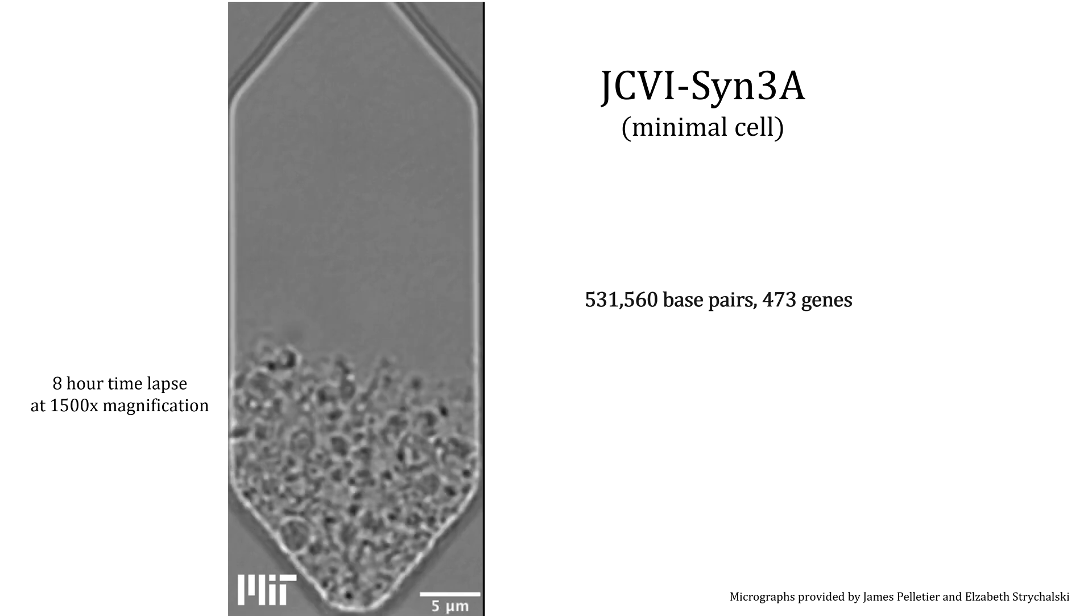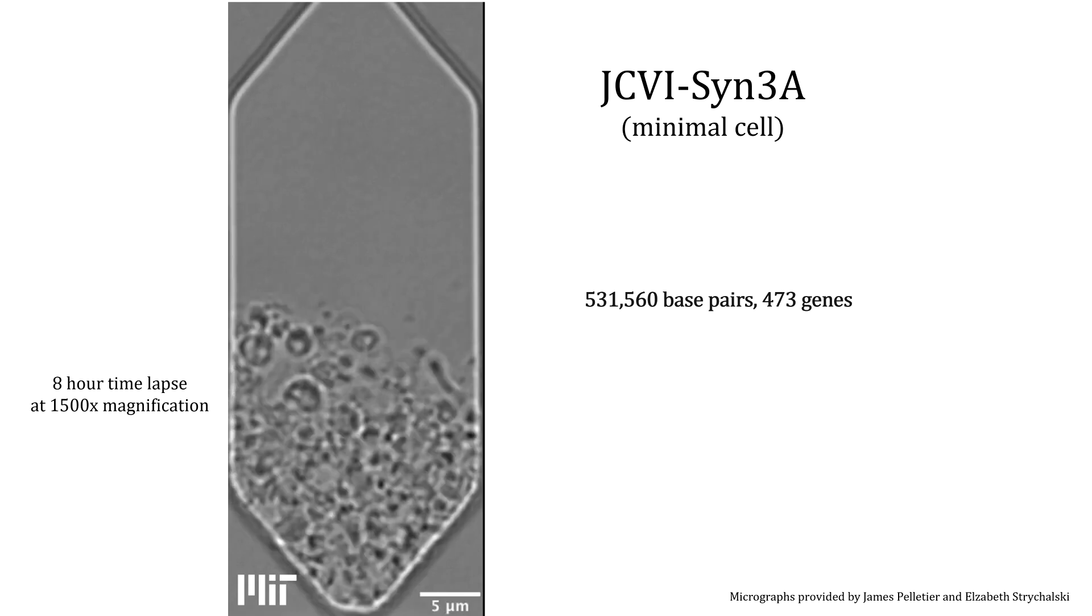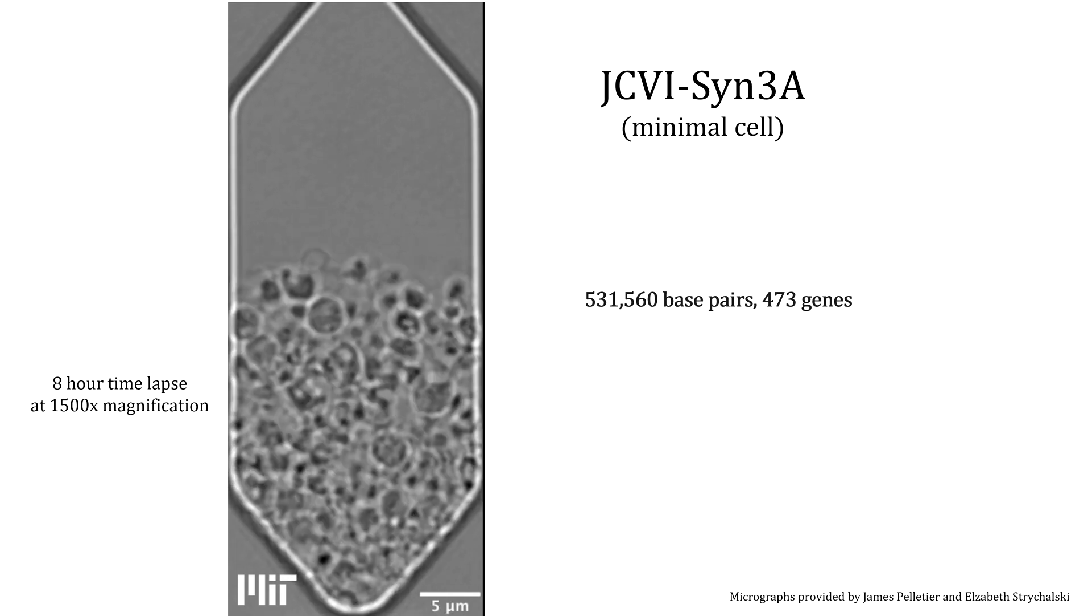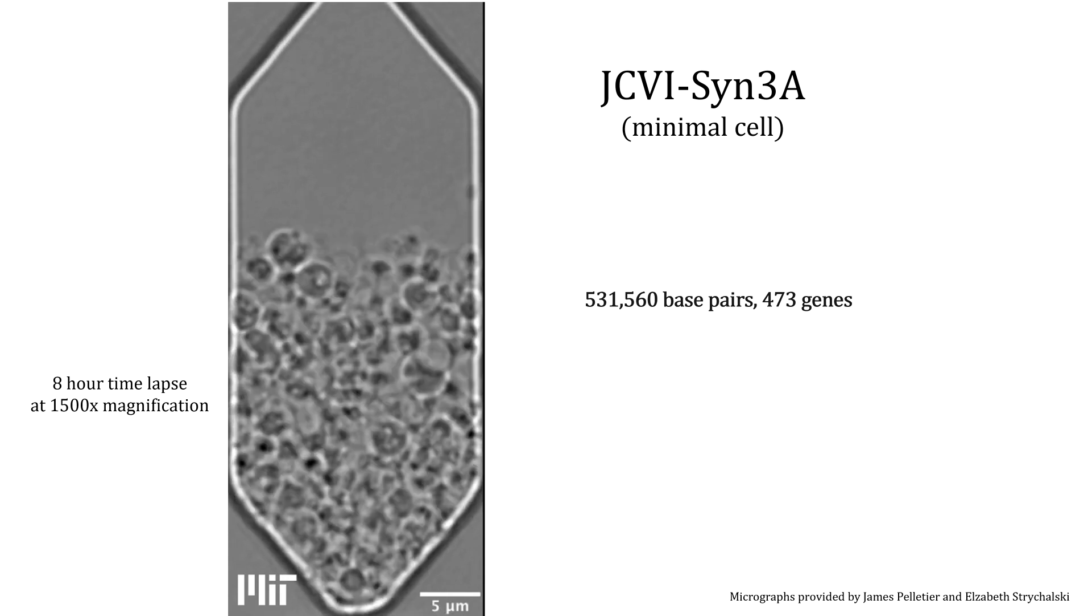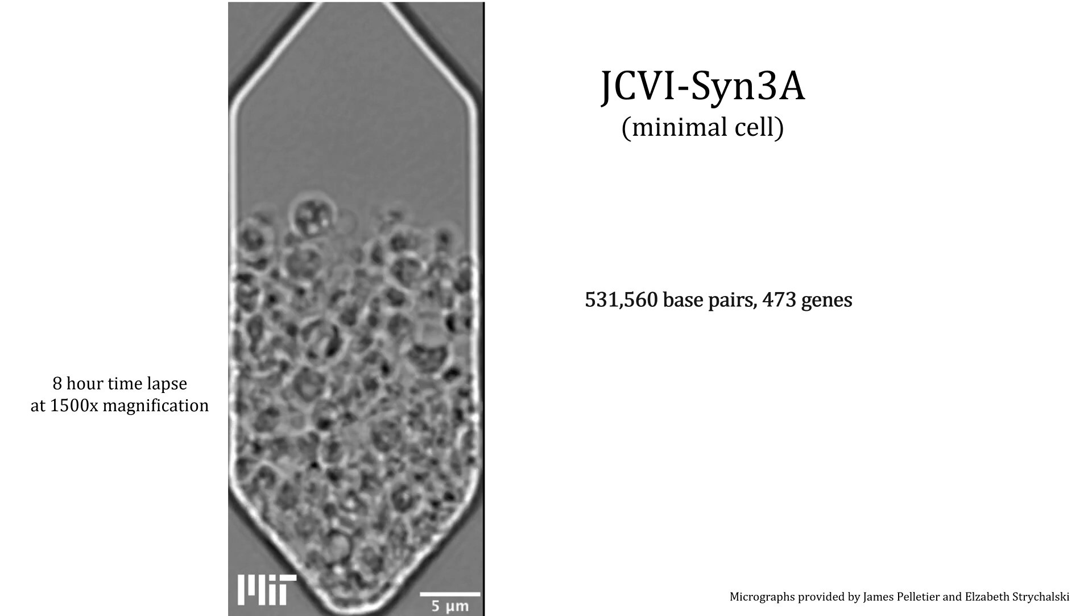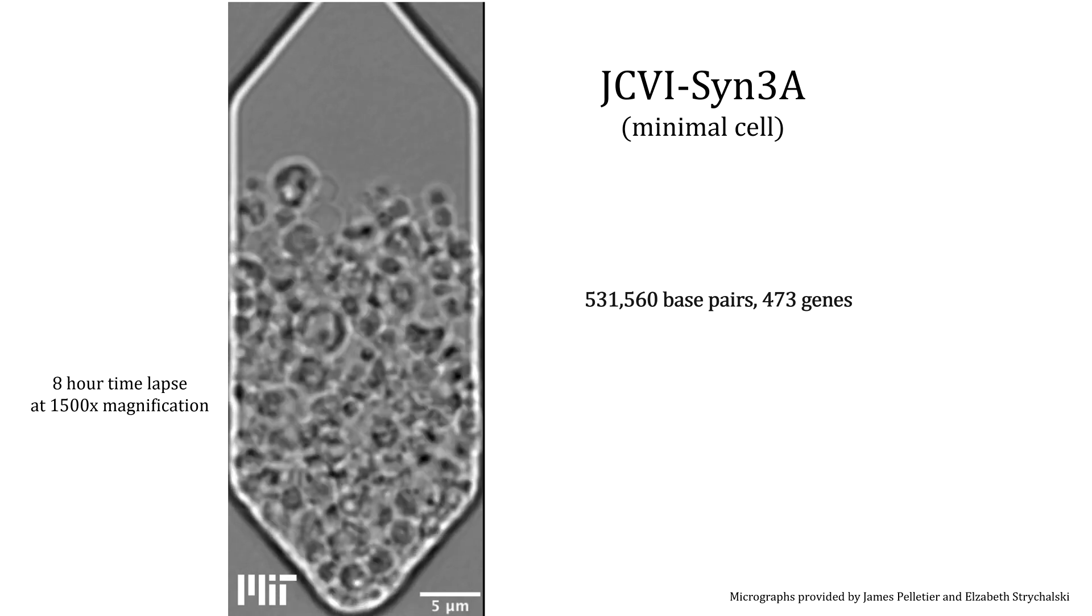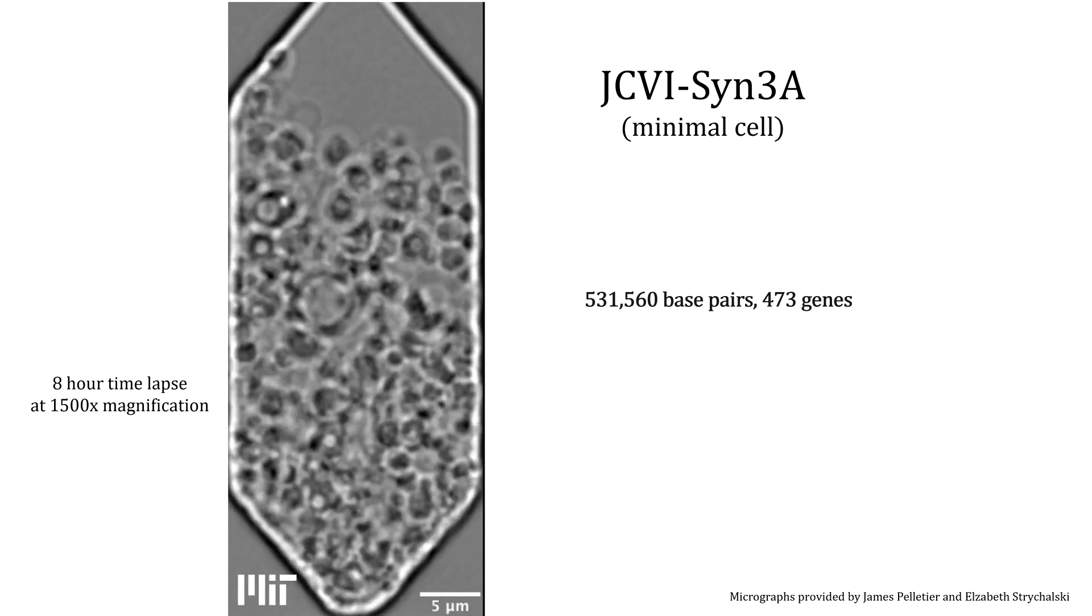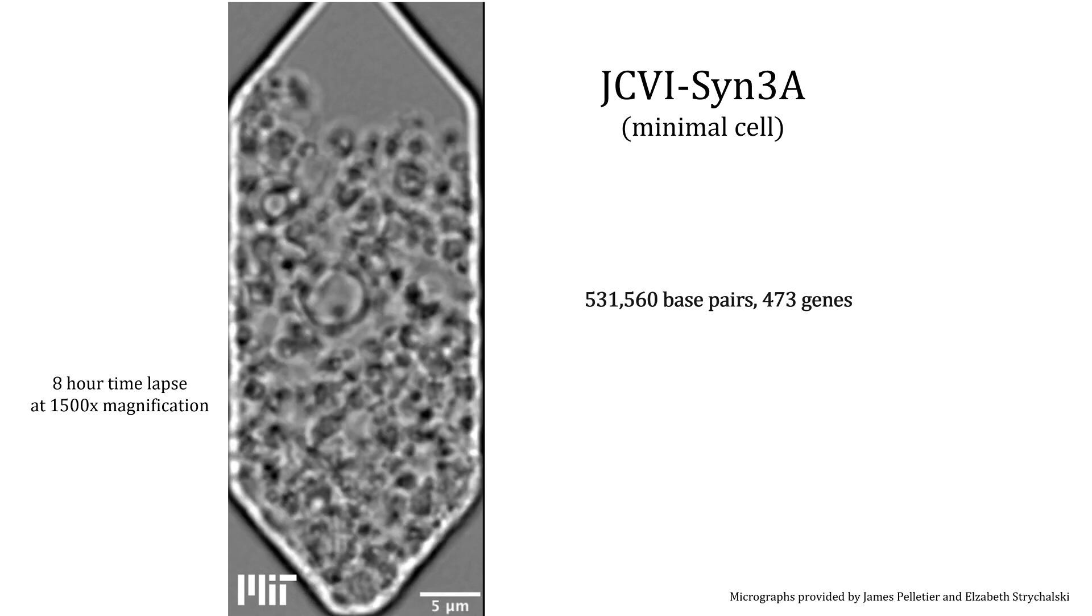Six years later, the team announced that they had created a synthetic minimal living cell containing only the genes necessary to sustain life in its simplest form. It had 531,560 base pairs and just 473 genes. They named it JCVI Syn 3a.